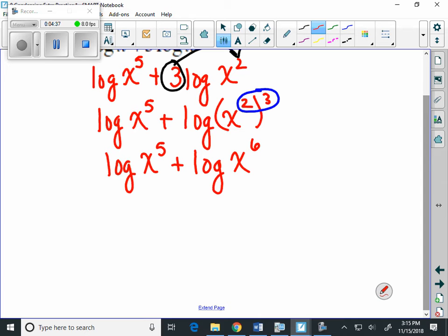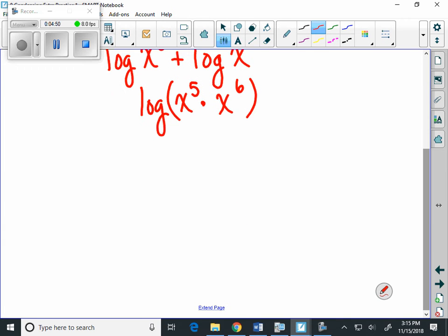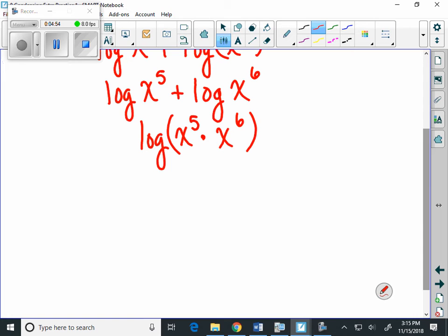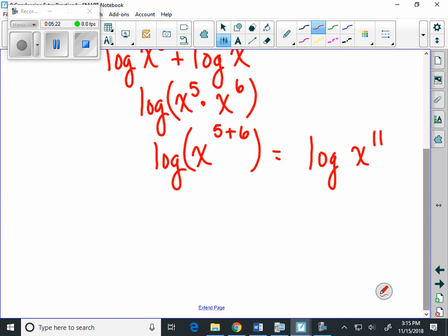Now we can apply the next logarithmic property, the product property. We can rewrite this as log of x to the fifth times x to the sixth. Then we go back to our exponent rules, which tell us that when we multiply two values that are like bases, we add the exponents. This is going to be x to the fifth plus sixth, which is log of x to the eleventh. Going back to the direction, express powers as factors if possible. So to finish this problem, we need to take that 11 and rewrite it in front of the log, and we get 11 log of x.